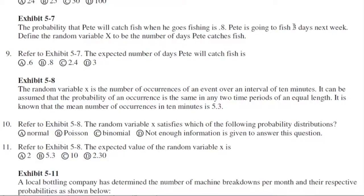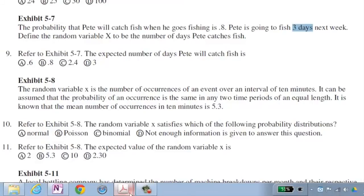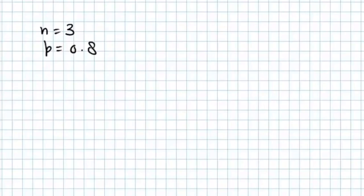There is a probability of catching fish which is 0.8. Over three days next week, when you read this type of problem, although it may not be explicitly indicated, you need to determine whether it is binomial, Poisson, or hypergeometric. What is given — n and p — indicates these are binomial situations. N and p are the parameters of the binomial distribution.